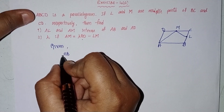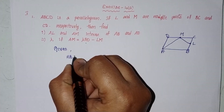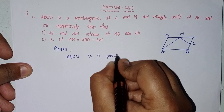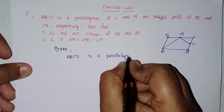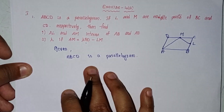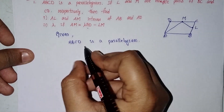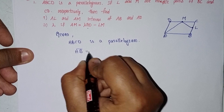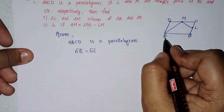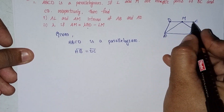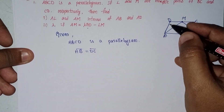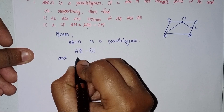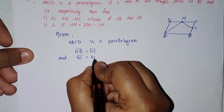Given: ABCD is a parallelogram. In a parallelogram, AB side and DC side are equal, so AB is equal to DC. Next, BC is equal to AD.